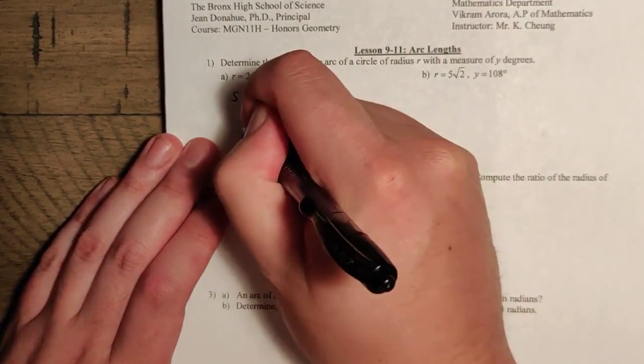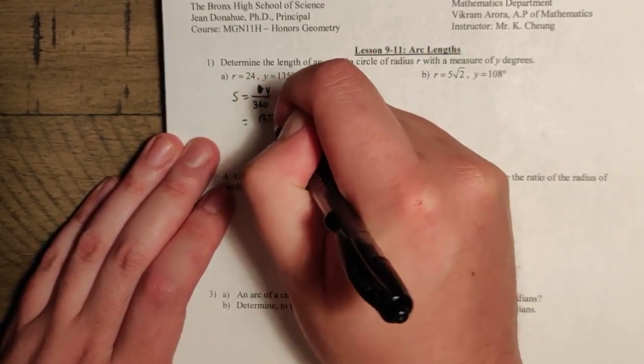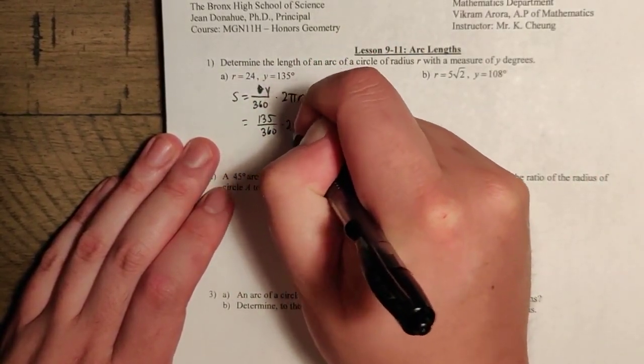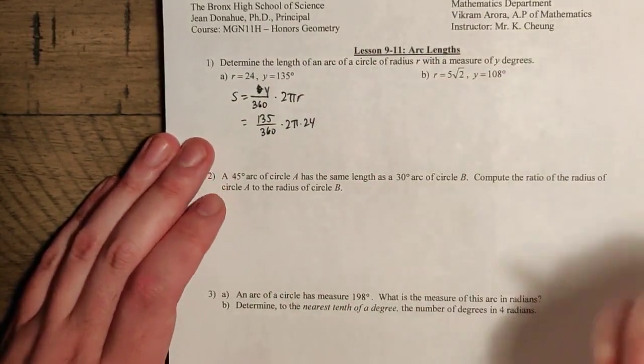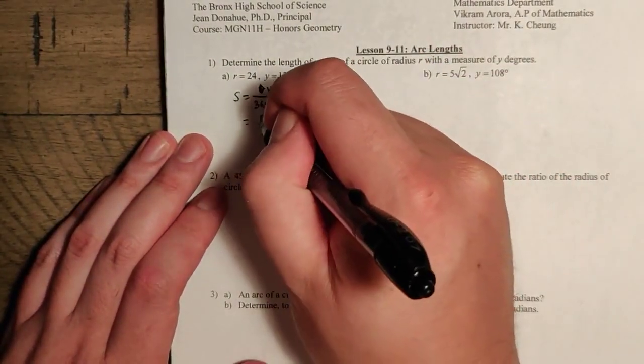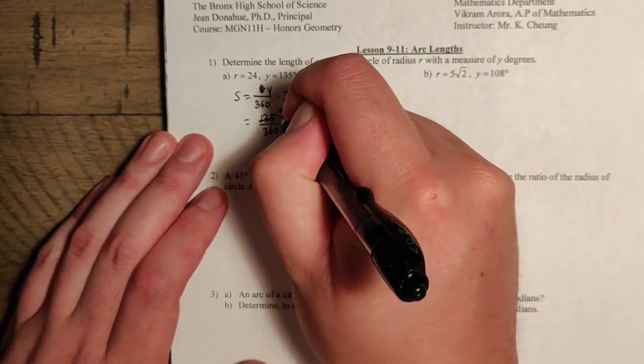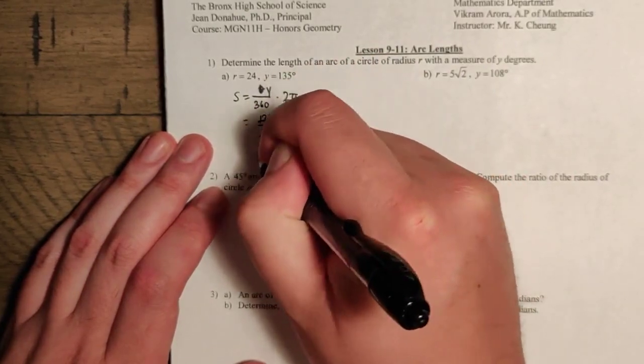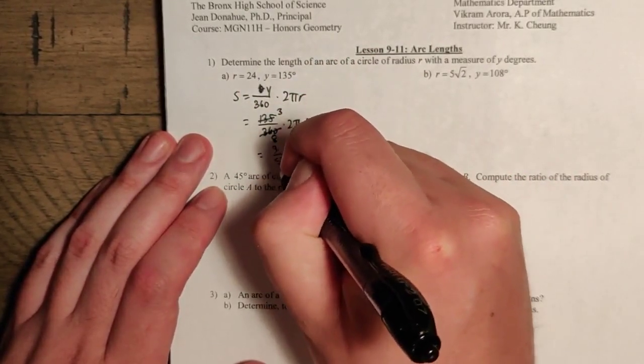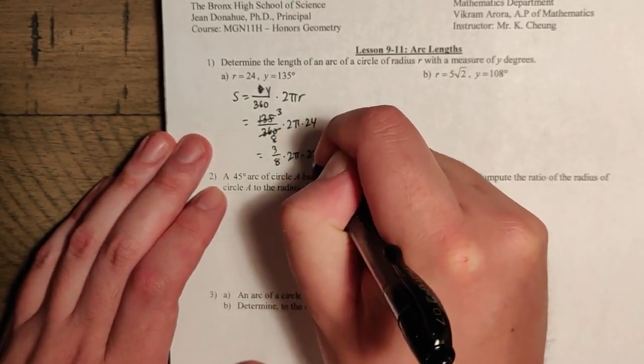So it's just a matter of substituting the things in. It's going to be 135 over 360 times 2 pi times 24. Now we know 135 and 360, both of them have a 45 in them. So we can cancel this out. We're down to 3, and here is 8. So it's going to be 3 eighths times 2 pi times 24.